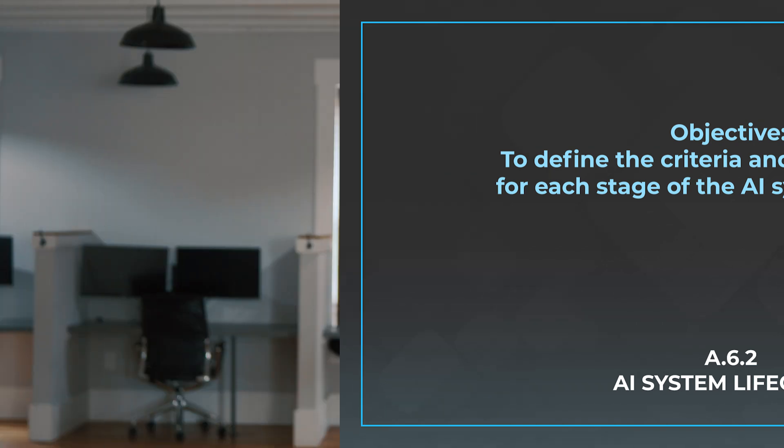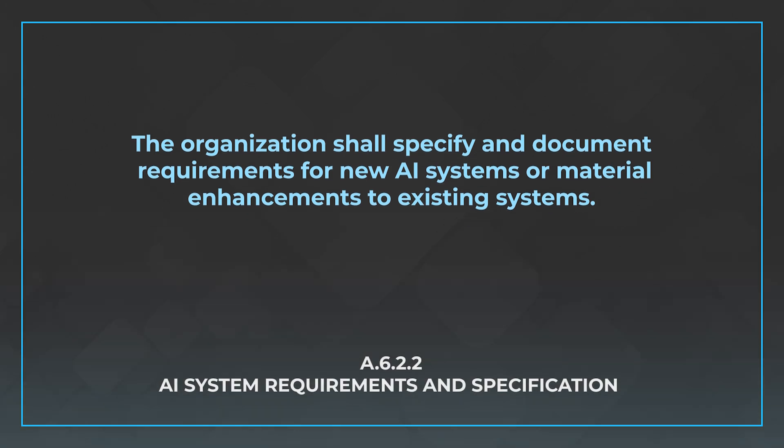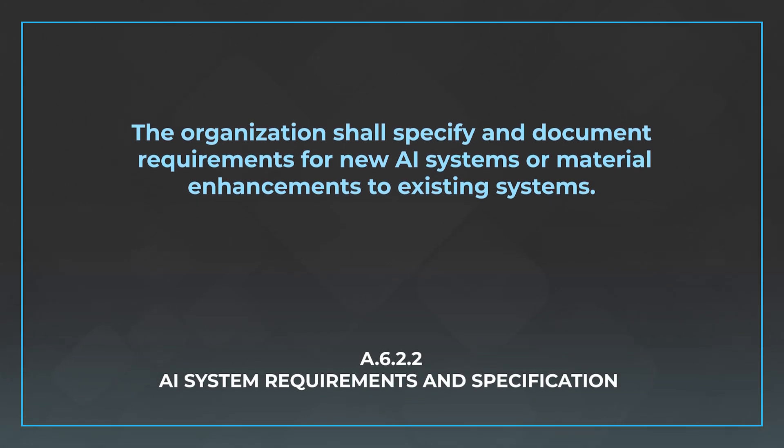The first control is A.6.2.2, AI system requirements and specification. This control basically says that you need to determine what the system requirements and specs are for your AI system. You can experiment and play around, but when you get to formal development you need to articulate those requirements. The control says the organization shall specify and document requirements for new AI systems or material enhancements to existing systems — not wildly different from a software development life cycle, just targeted towards AI.